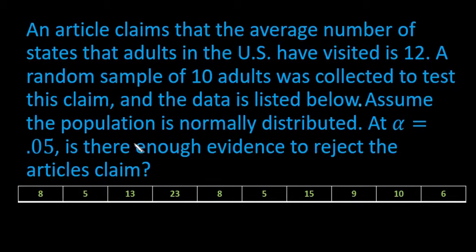The situation we have is that an article claims the average number of states that adults in the US have visited is 12. A random sample of 10 adults was collected to test this claim and the data is listed below. Assume the population is normally distributed at alpha equals 0.05. Is there enough evidence to reject the article's claim?